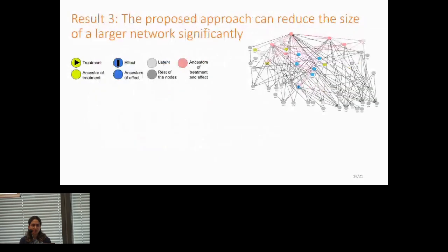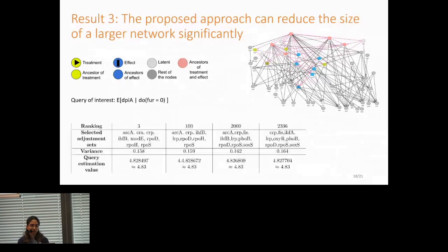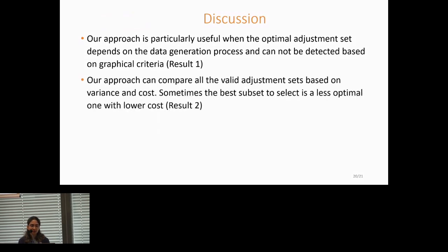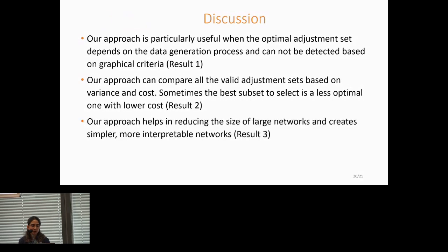And finally, the last result is just for showcasing how this approach can reduce the size of large networks into a smaller network based on the valid adjustment set that we select. And here's the conclusion. Our approach is particularly useful when optimal adjustment sets depend on the data generation process and cannot be detected based on graphical criterion. And this was the first result. Our approach can compare all the valid adjustment sets based on variance and cost. Sometimes the best subset to select is a less optimal one with a lower cost. Our approach helps in reducing the size of large networks and creates simpler, more interpretable networks, which was the last result.